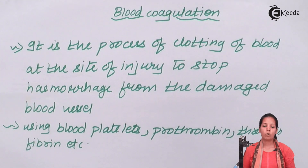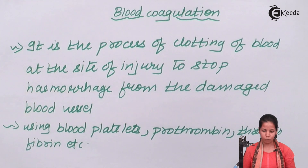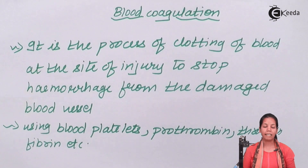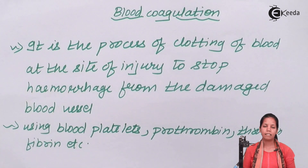This thrombus or clot is essentially a mass of connective tissue that rapidly stops the bleeding at that point, so no further blood loss or hemorrhage occurs. It also provides the necessary cells for tissue replenishment later on.